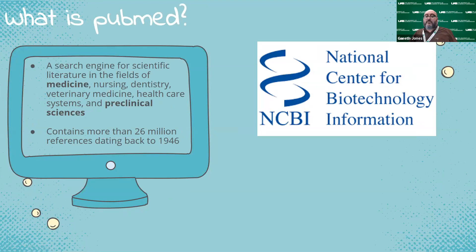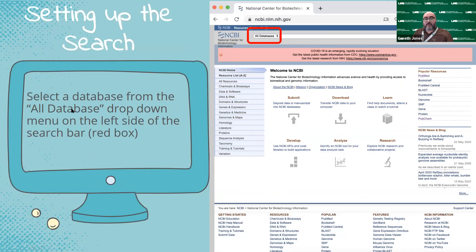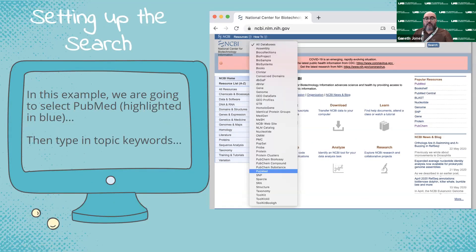One thing to think about is PubMed — I'm sure some of you have probably heard of this. This is really the biggest place where you can go and look for articles. It's a giant search engine for all the different scientific literature across all sorts of different fields. It contains over 26 million references back to 1946. It's put together by the NCBI — the National Center for Biotechnology Information.